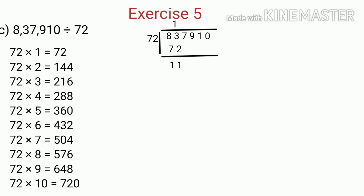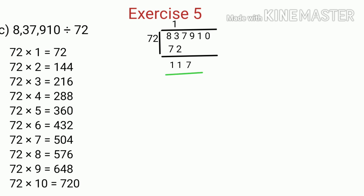Now we bring down the next digit, that is 7. We now compare 117 and 72. Since 117 is greater than 72, we have to find the product of 72 which is equal to, or less than, and nearest to 117. We get the nearest product as 72. So we write 1 in the quotient, because 72 multiplied by 1 is equal to 72. And then we subtract 72 from 117, which is equal to 45.